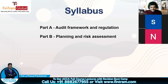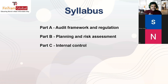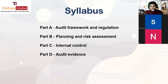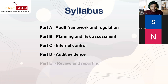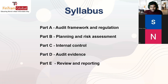The syllabus is structured like the audit process itself — from planning through execution to reporting. Part B covers Planning and Risk Assessment. Part C is Internal Controls. Part D is Audit Evidence — how auditors gather evidence and what processes are involved. Part E is Review and Reporting — the reporting phase — including audit opinions and what to consider when issuing an auditor's report.